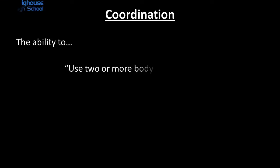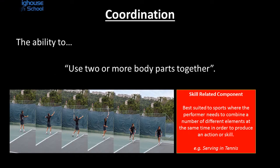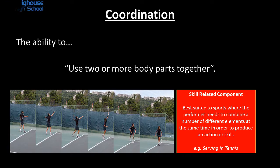Coordination is the ability to use two or more body parts together. Coordination is used in pretty much every sport, but a really good example is serving in tennis where you have to combine throwing the ball in the air, viewing the ball in the air, and then striking the ball with your other hand — a perfect example of coordination in sport.